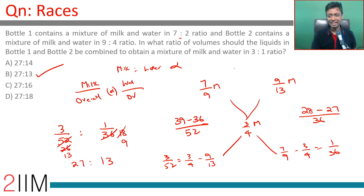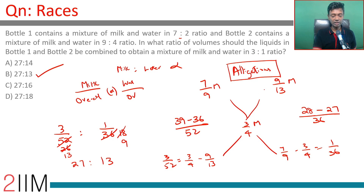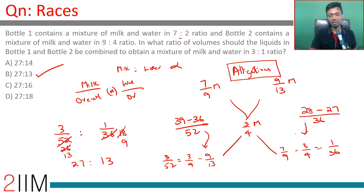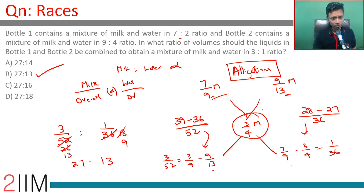The allegation method is very useful. Do 5 questions on it, see the proof, and intuitively understand why it works — think about the notion of splitting the difference. The computational part is not easy but it is doable. Mixing two mixtures to get one mixture and finding the ratio is a very regular question type. Get some practice and you should nail these questions.